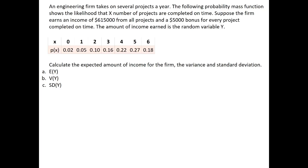In this example we will use the rules for expectation and variation for linear combinations. An engineering firm takes on several projects a year. The following probability mass function shows the likelihood that X number of projects are completed on time.